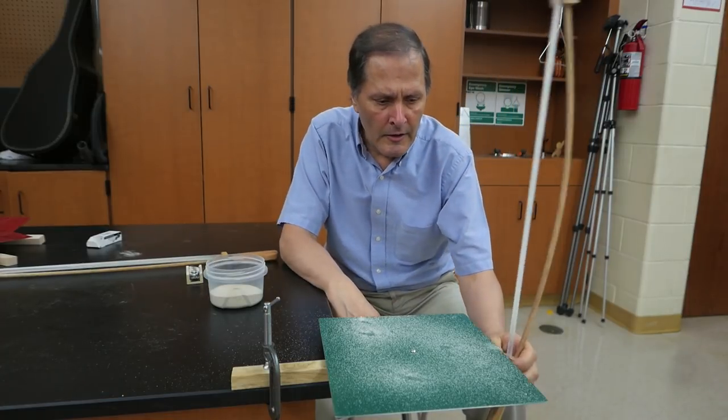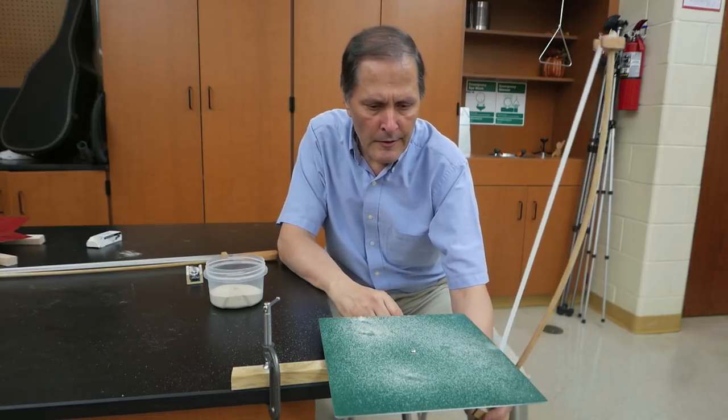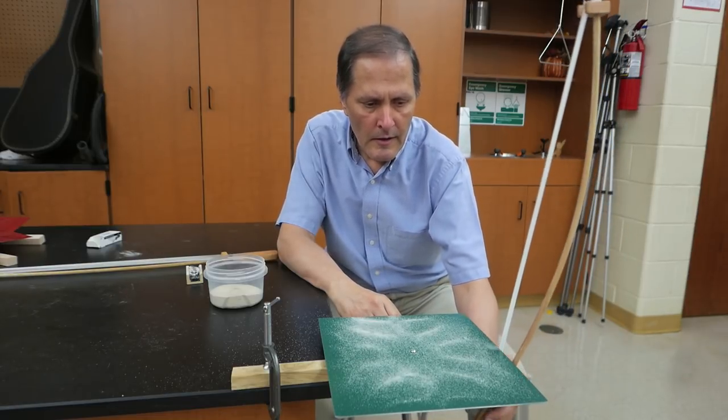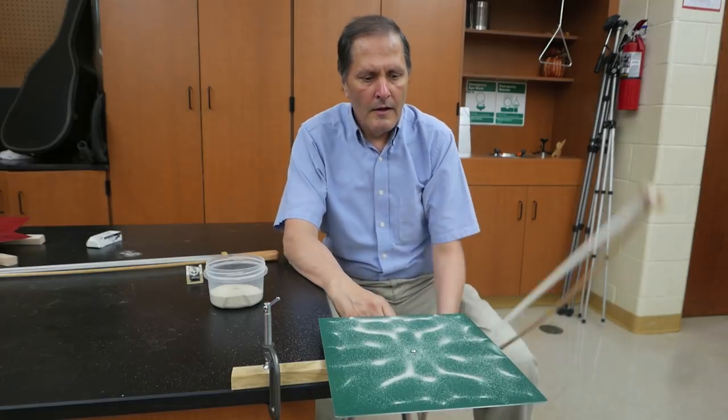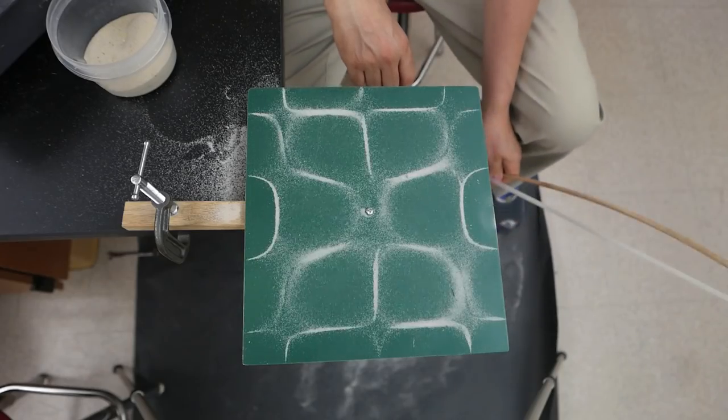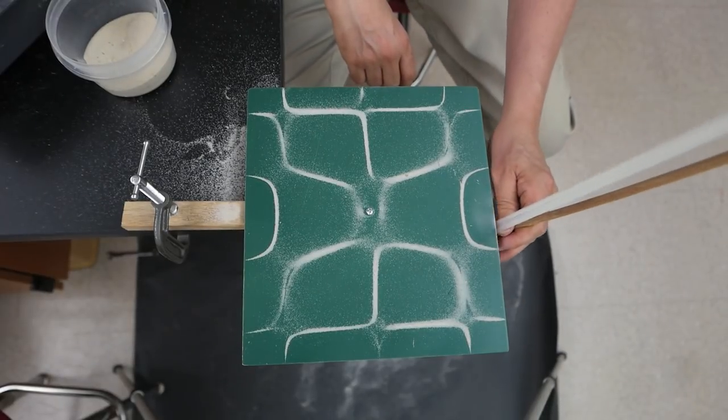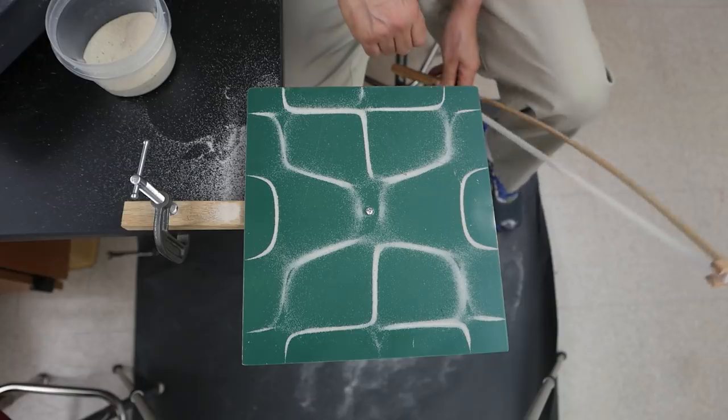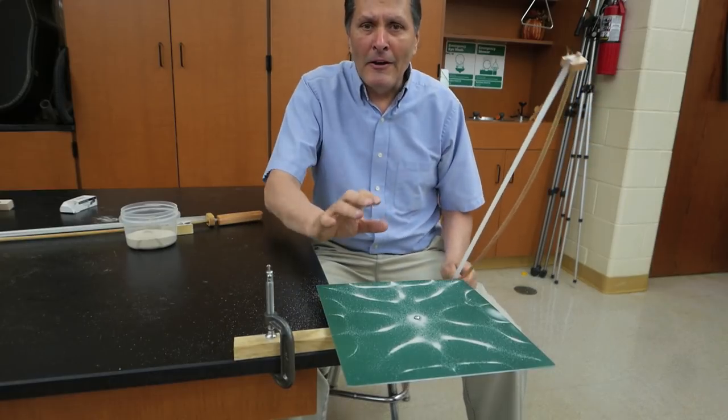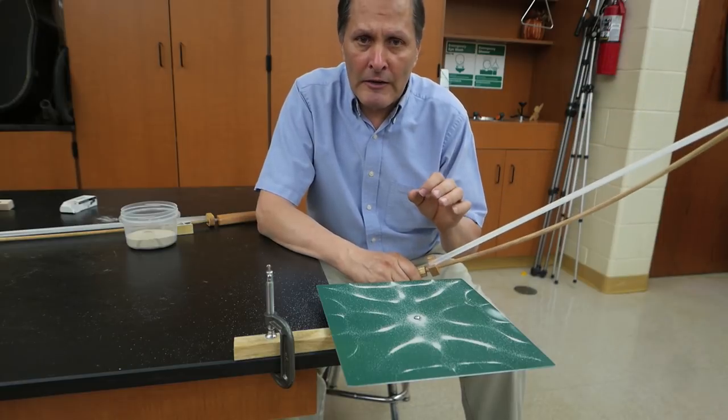Now to use the Chladni plates we're simply going to sprinkle a little bit of sand on it and then rosin up the bow, and by rubbing it against the side of the plate hopefully we'll get a vibration. Now depending on where we rub on the plate we may be able to get different frequencies which is going to give us different patterns.